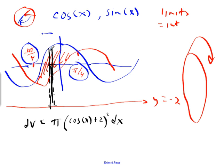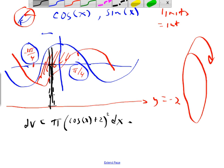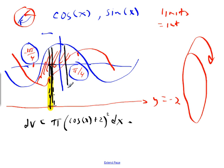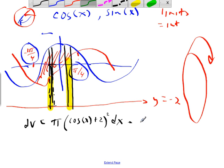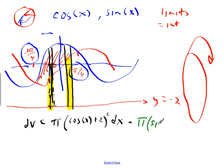The little bit of volume from the cosine disk is pi times (cosine of x plus 2) squared dx — that's the volume rotating cosine x around the y equals negative 2 axis. Then we subtract away the volume from rotating sine x, so we subtract pi times (sine of x plus 2) squared dx. The black disk is cosine and the yellow disk is what we're subtracting away.